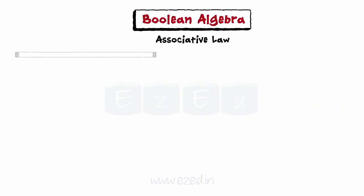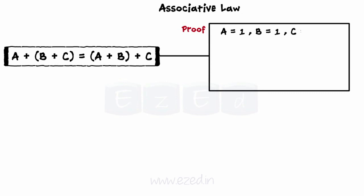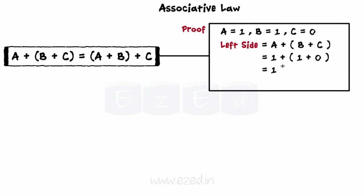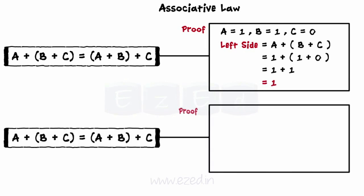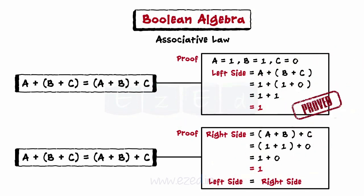Next are the associative laws. The first law is a plus (b plus c) equals (a plus b) plus c. Assume a equals 1, b equals 1, and c equals 0. Left-hand side equals 1 plus 1 plus 0 equals 1. Right-hand side equals 1 plus 1 plus 0 equals 1 again. As left side equals right side, the law is hence proved.